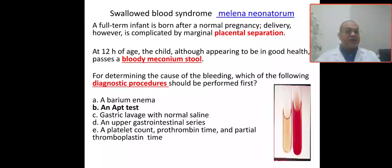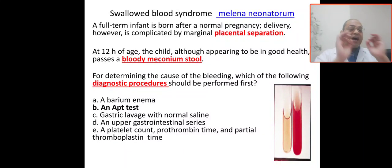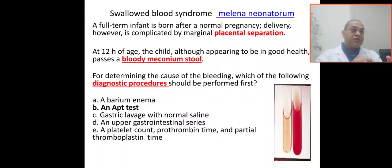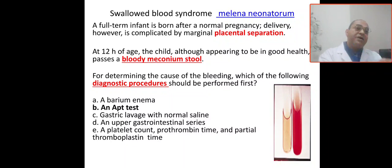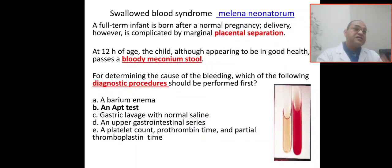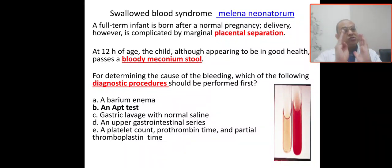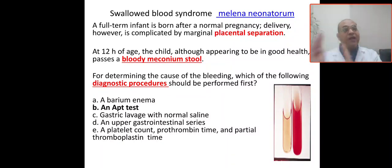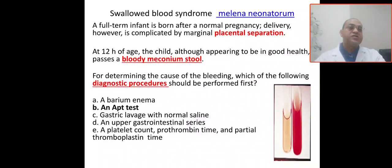You have to do the Apt test first. After the Apt test, if positive, indicating the blood came from the baby, you proceed with full workup. If the Apt test shows the blood came from maternal or placental origin, no further workup is needed and you manage the baby conservatively.